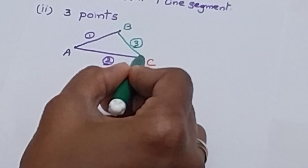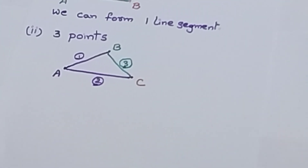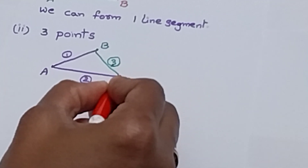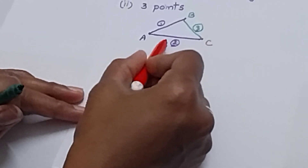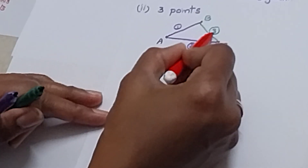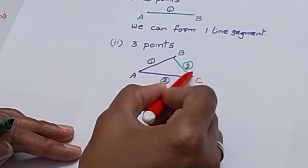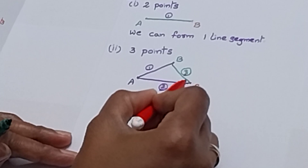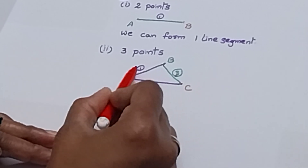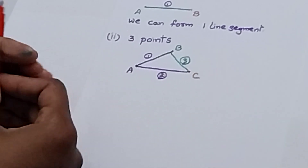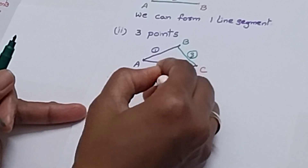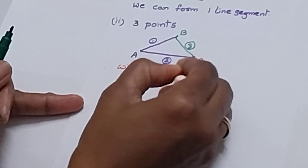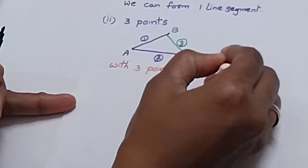From B, 2 points are connected. Now we think about C. From C to A — segment already there, ignore. C to B — segment already there, ignore. So we connected 3 points in all possible ways. How many line segments formed? 1, 2, 3. Therefore, with 3 points, we can form 3 line segments.